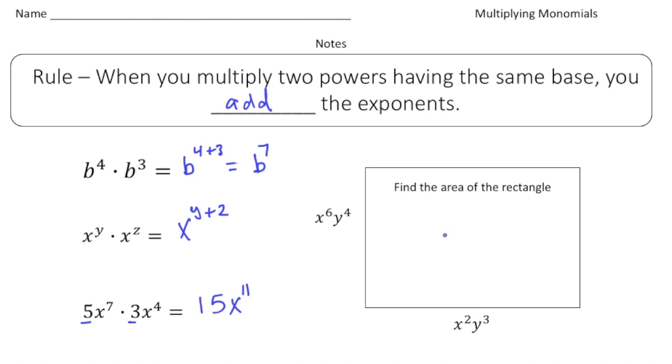Now for this one we have a rectangle and we want to find the area. To find the area you have to do area equals length times width. We know our length is x squared y cubed, and we know our width is x to the sixth and y to the fourth.